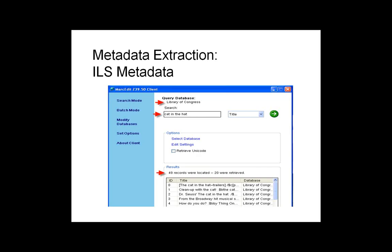MARC bibliographic records stored in an ILS are a great source of metadata. MARC records are rich, authoritative resources and should be easy to extract with a Z39.50 client. MARCedit's Z39.50 client, embedded in Terry Reese's MARCedit program, provides a user-friendly interface. In this screenshot, you can see a search of the Library of Congress database for the title 'The Cat in the Hat.' It found 49 records, retrieved 20, and you can browse through them to determine which ones you want, then download them to a local file on your computer.